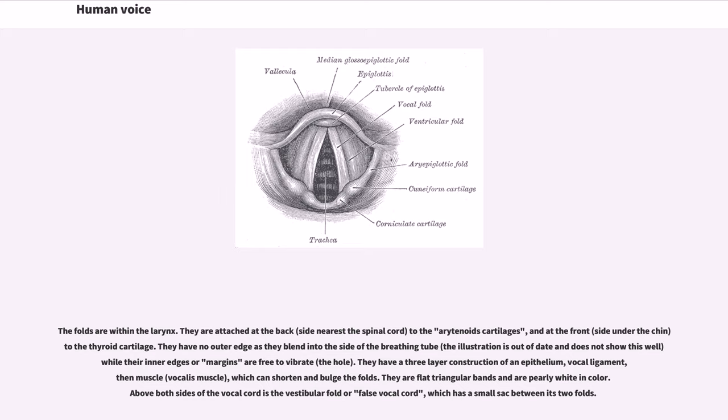The folds are within the larynx. They are attached at the back to the arytenoid cartilages and at the front to the thyroid cartilage. They have no outer edge as they blend into the side of the breathing tube, while their inner edges or margins are free to vibrate. They have a three-layer construction of an epithelium, vocal ligament, then muscle, which can shorten and bulge the folds. They are flat triangular bands and are pearly white in color. Above both sides of the vocal cord is the vestibular fold or false vocal cord, which has a small sack between its two folds.